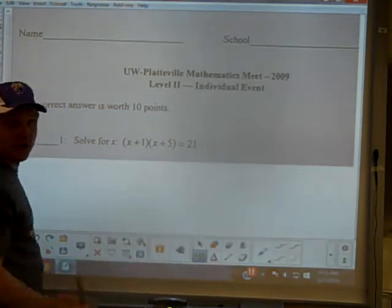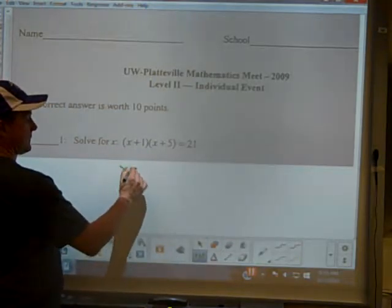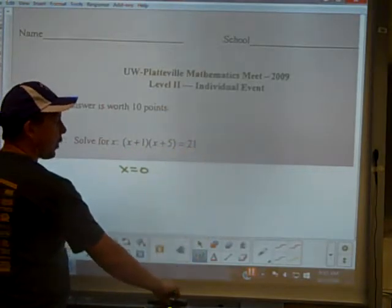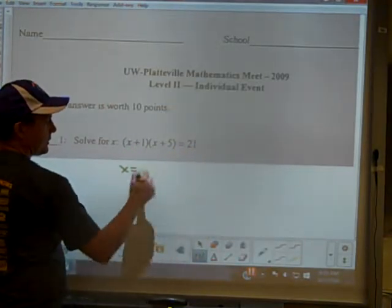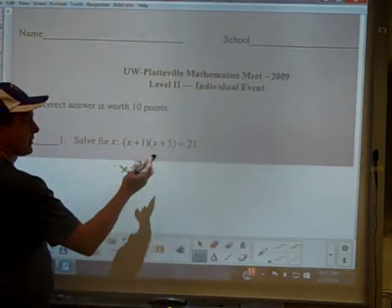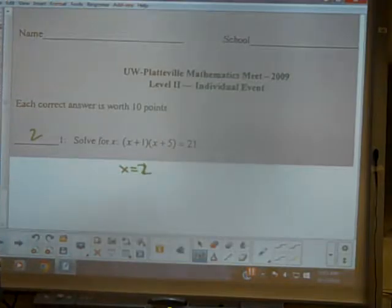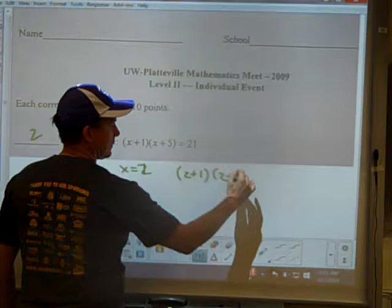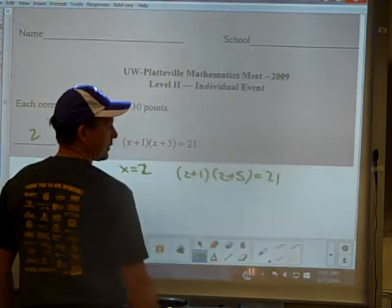When I look at this, you could guess and check, start guessing. You could say x is 0, you try 0 and you get 5 equals 21. You can guess 1 and you get 2 times 6 is 12. You guess 2, you get 3 times 7. So automatically, just guessing, we can find 2 as an answer. Because when you plug 2 in, you're going to get 21.